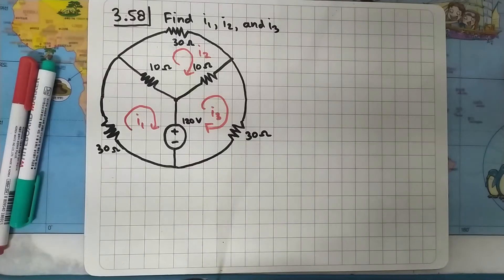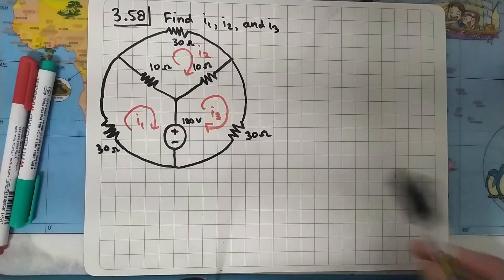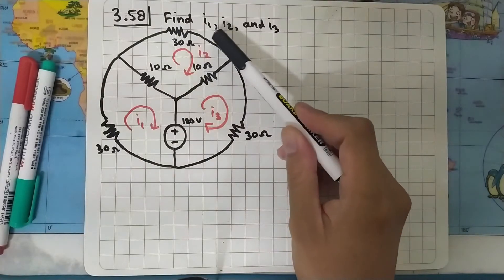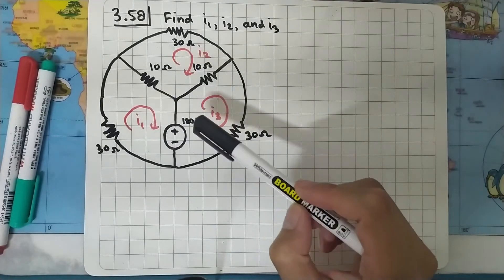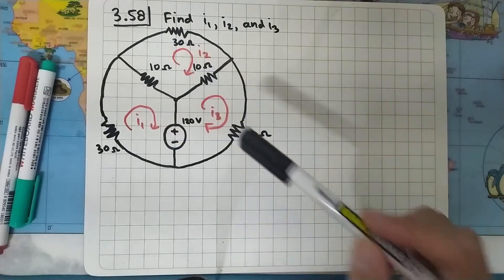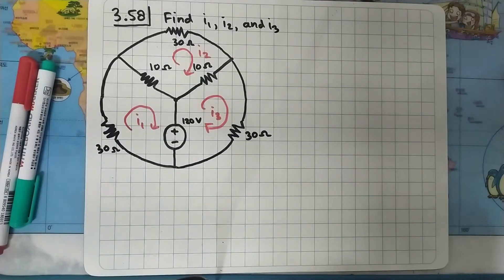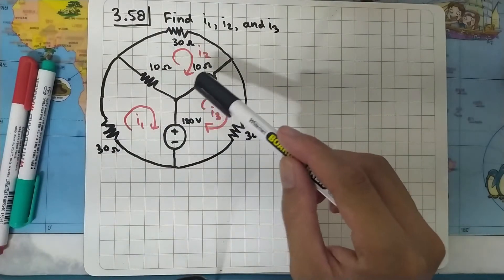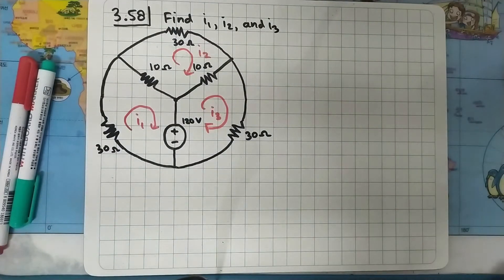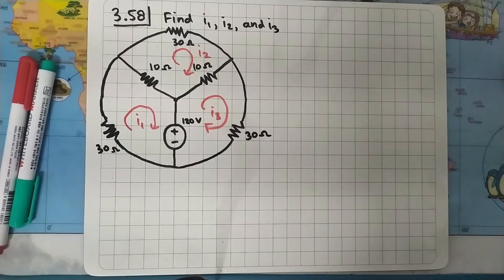We are going to solve problem 3.58 from Sadiku's book. The question is to find i1, i2, and i3, which are current loops in three circular circuits. It's actually a regular circuit but shaped like a circle, so don't be intimidated by it.